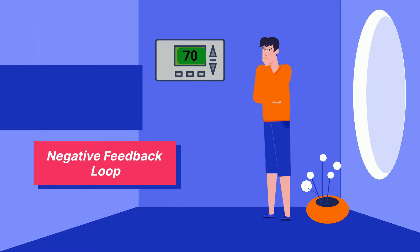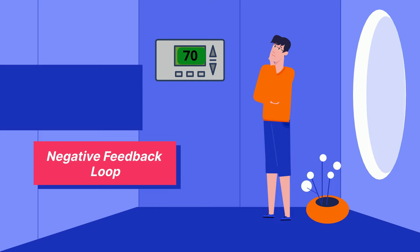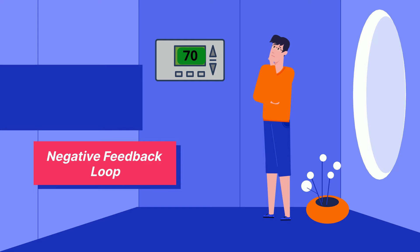If it's set at 70 degrees Fahrenheit and the temperature gets above this, the air conditioner will turn on in order to cool the house. When it falls below 70 degrees, it will turn off. This will continue.